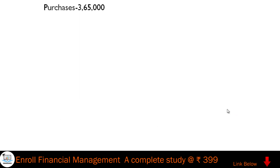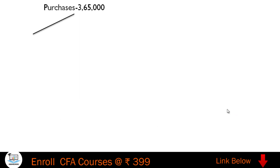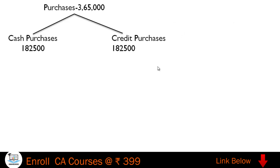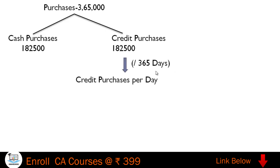In this illustration, total purchases made by the company are three lakh sixty-five thousand. To find credit purchases, we subtract cash purchases of one lakh eighty-two thousand five hundred, giving credit purchases of one lakh eighty-two thousand five hundred. To get credit purchases per day, we divide this annual figure by 365.